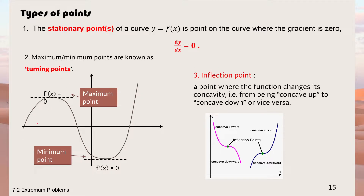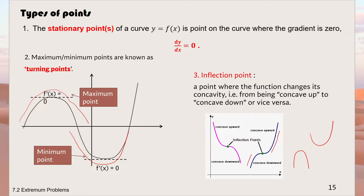A turning point means the gradient changes from positive to negative, or from negative to positive. An inflection point never changes the gradient sign — the gradient can remain positive, but the concavity changes. At the beginning the curve is concave down like an n-shape, then it changes to concave up like a u-shape.